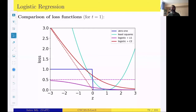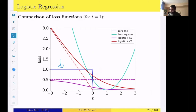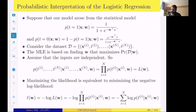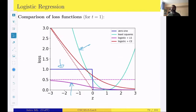We can compare some of the losses we introduced. We have the zero-one loss, which is the ideal loss for binary classification, but the problem is that it's not easy to optimize. We also saw other examples: least squares loss, or logistic activation function combined with least squares loss. That was the point where we stopped last time.